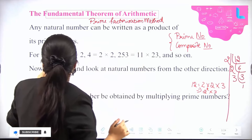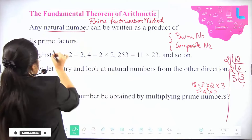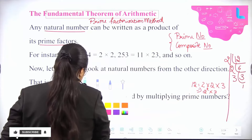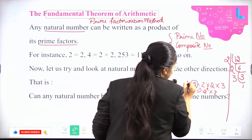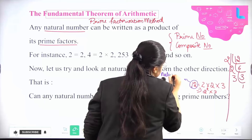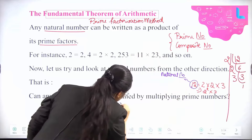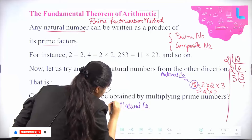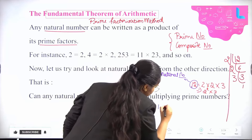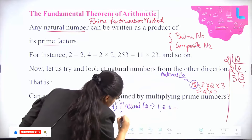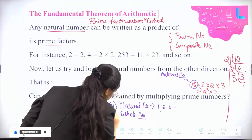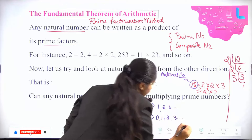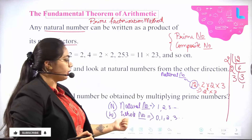To sum it up: the Fundamental Theorem of Arithmetic states that any natural number can be written as a product of prime factors. What is a natural number? Natural number is always represented by N, starting from 1, 2, 3 and going on. Whole number is represented by W and starts from 0. Natural number starts from 1 and whole number starts from 0.